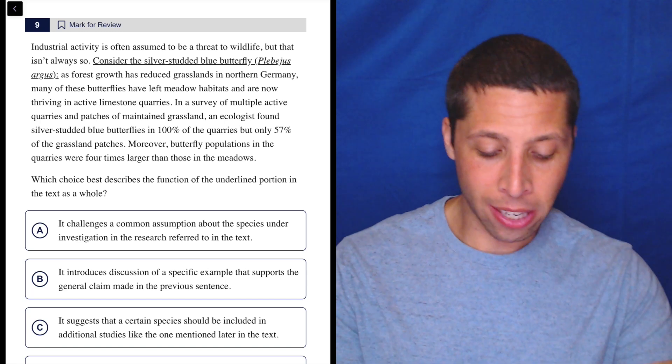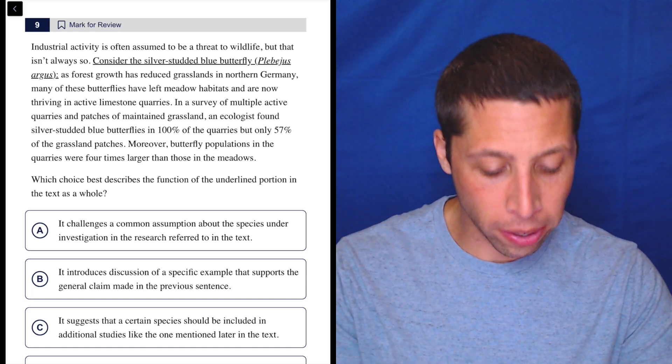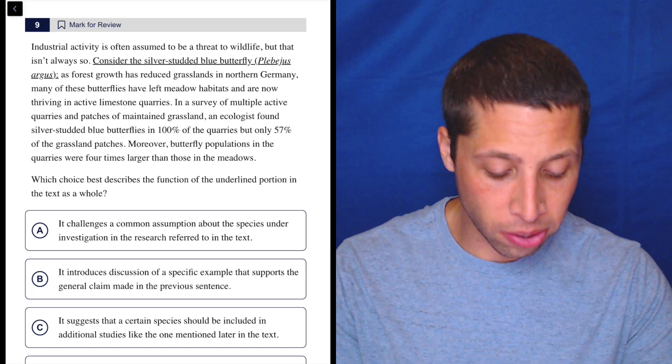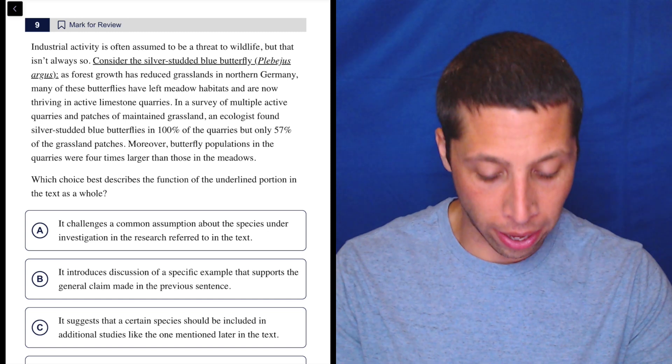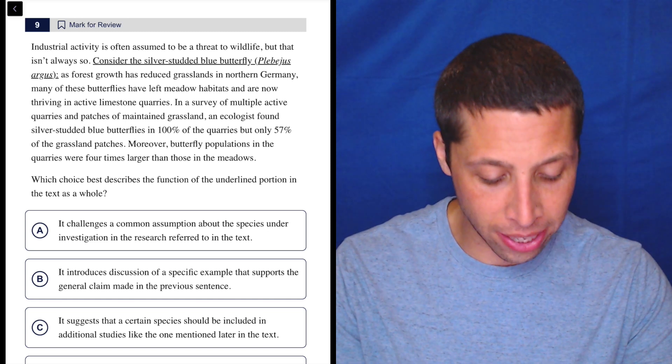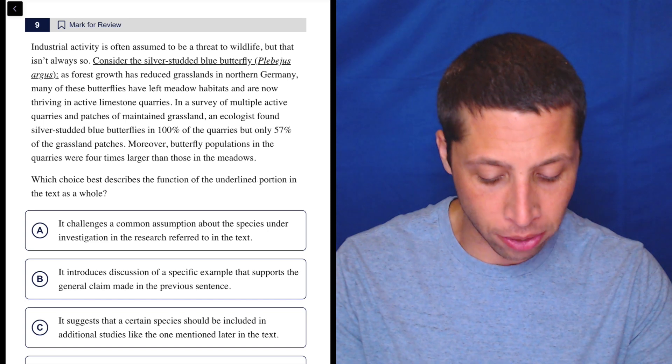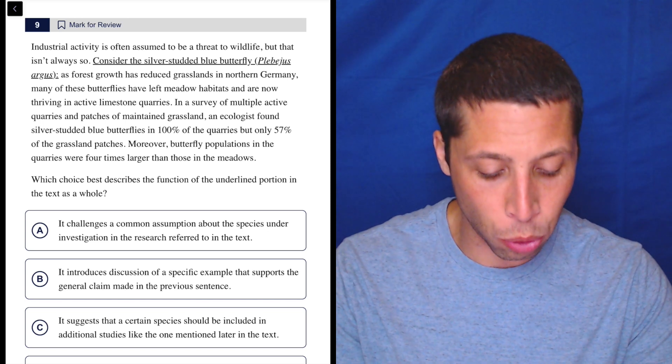All right, let's just look at the passage. Industrial activity is often assumed to be a threat to wildlife, but that isn't always so. Consider the silver-studded blue butterfly. As forest growth has reduced grasslands in northern Germany, many of these butterflies have left meadow habitats and are now thriving in active limestone quarries.